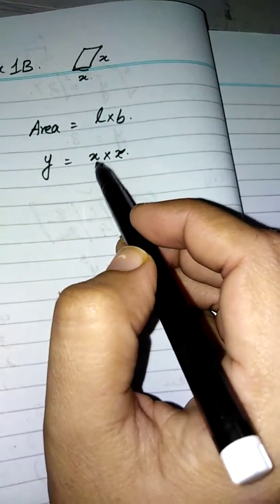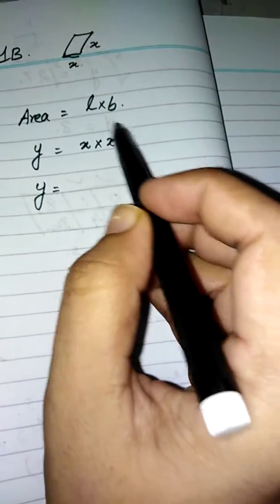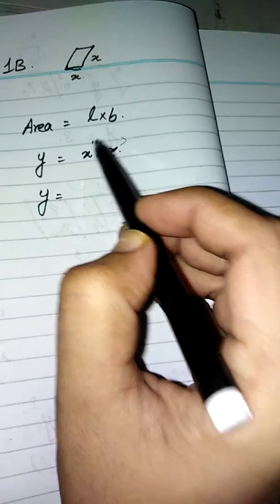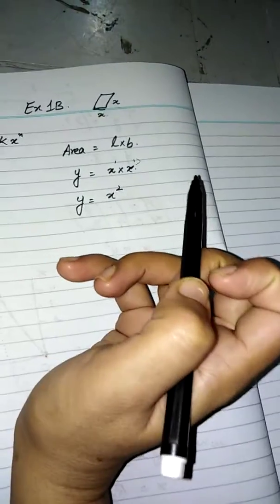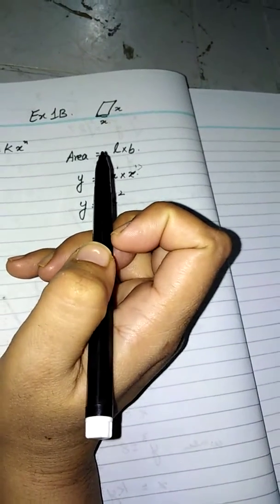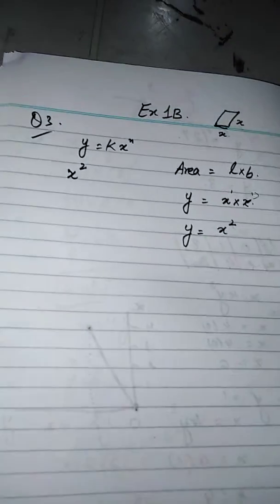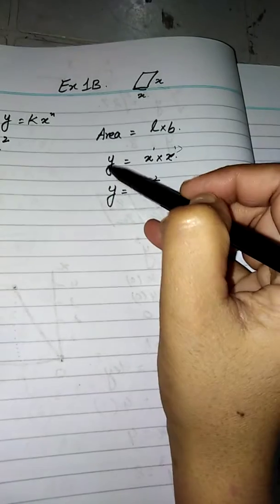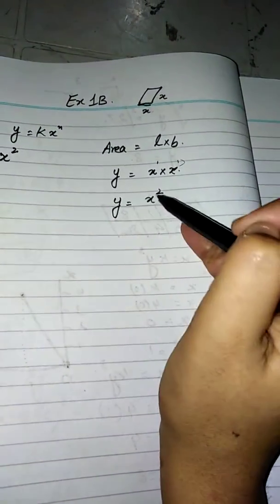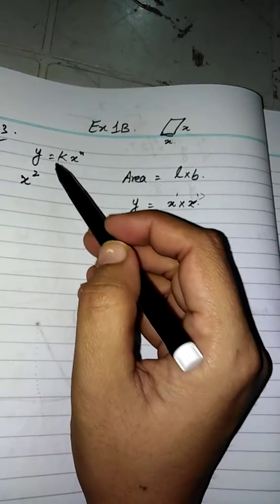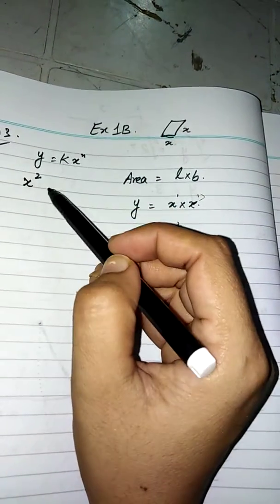In a square, length and breadth are the same, so y equals x times x. When the same variables multiply, their powers add: 1 plus 1 equals 2, giving x². So y equals x². Since y is the area and y equals x², we can write x² instead of y, giving x² equals kx^n.